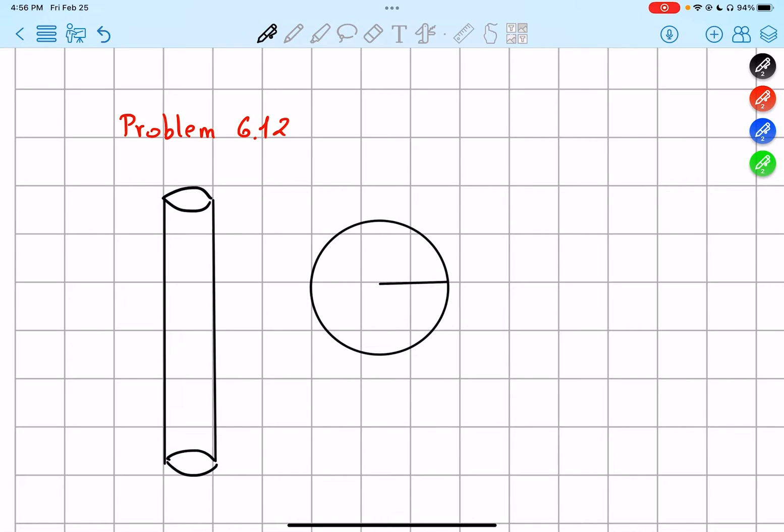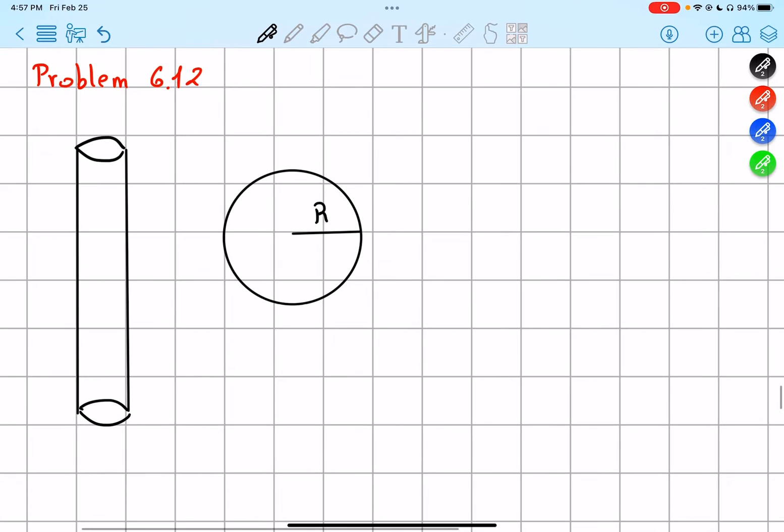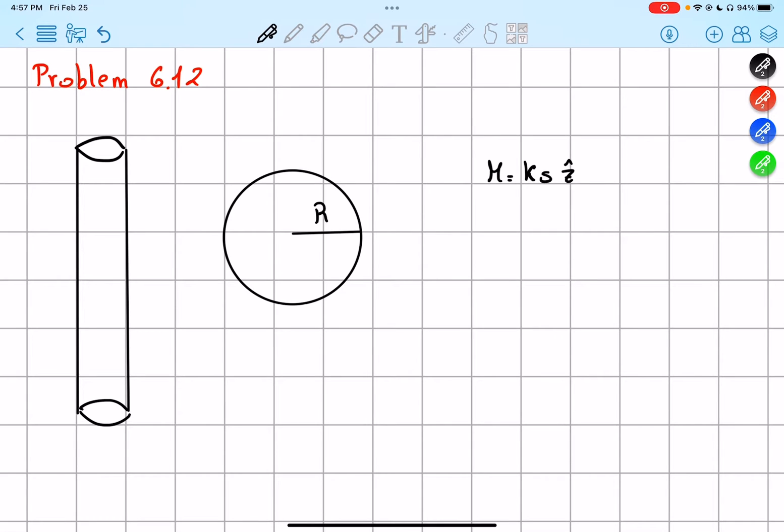So we are going to have M is equal to Ks in the z-hat direction. We know what the M is going to be, where K is a constant and s is the distance from the axis. So it means that the magnetization decreases as we get further and further from the axis. So we have a lot of magnetization here and then less as we get further.